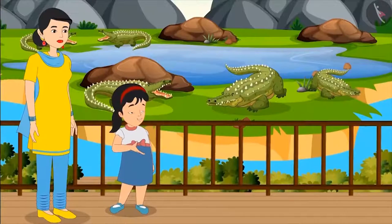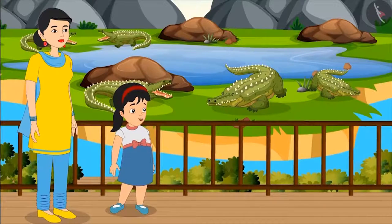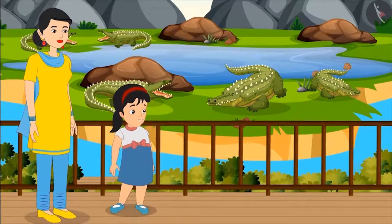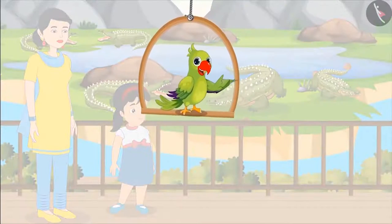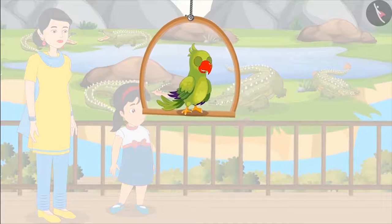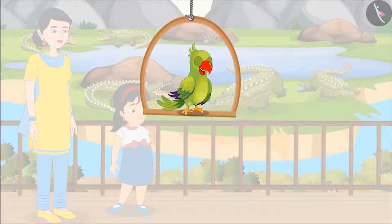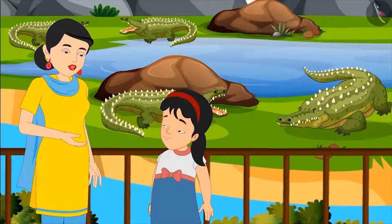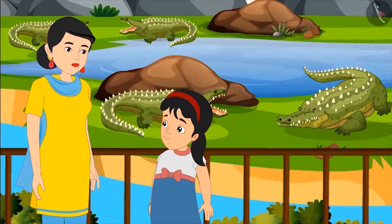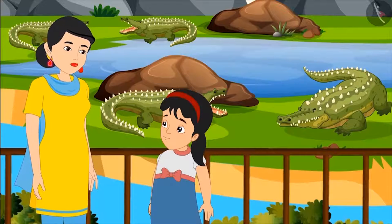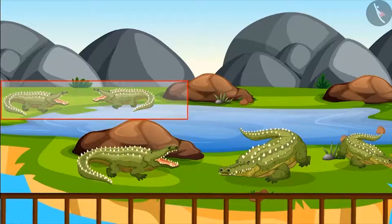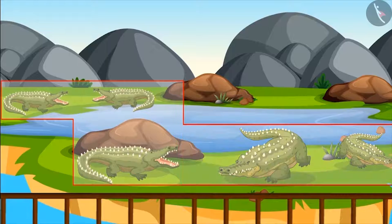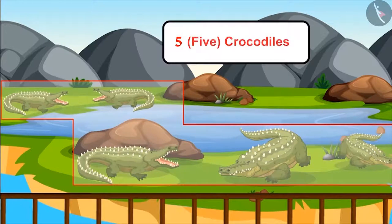But which animal is in that water paddock? I have never seen it before. Children, can you tell me which animal is there in that water paddock, and what is its number? Come on, let's see. My dear, there are crocodiles in that paddock. Can you tell me how many crocodiles are there? One, two, three, four and five — that means that paddock has five crocodiles.